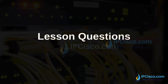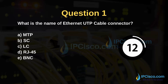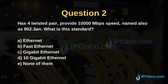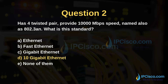This is the end of the lesson. Let's test what we have learned. Question 1: What is the name of the Ethernet UTP cable connector? The answer is RJ45. Question 2: A cable with four twisted pairs, providing 10,000 megabits per second speed, also named 802.3AN — what is this standard? The answer is 10 Gigabit Ethernet.